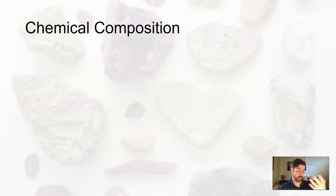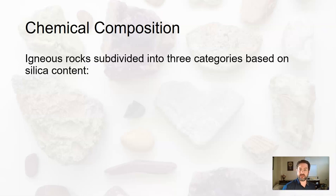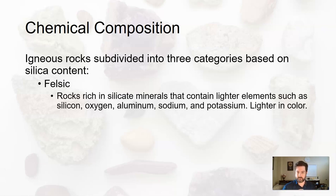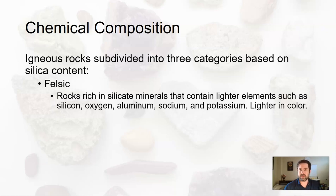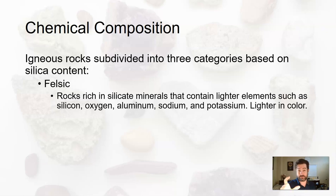Besides looking at the texture, which you can just eyeball, you can also look at the chemical composition of an igneous rock to further tell that story. Igneous rocks can be subdivided into three categories based on silica content. A felsic igneous rock formed from cooled magma or lava that was very high in silicate minerals — those common minerals containing lighter elements like silicon, oxygen, aluminum, sodium, and potassium. They happen to be lighter in color. So if you're looking at an igneous rock and it's lighter in color, it's felsic.